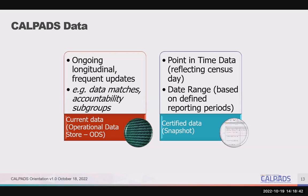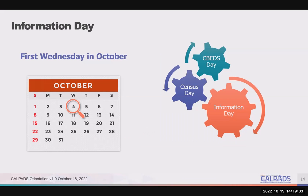The next two slides cover a few common terms to understand when working with CALPADS. There are two different types of data: the current data in the operational data store, or ODS, which is what is in CALPADS at any given time, reflecting frequent ongoing updates; and the certified or snapshot data, which reflect either a specific point in time, like census day, or a specific date range such as July 1 to June 30th. Certified data is usually a subset of what is in the ODS. Report aggregates can be captured as of a single day or from a date range. Information day is that single day — it is always the first Wednesday in October, referred to as census day.